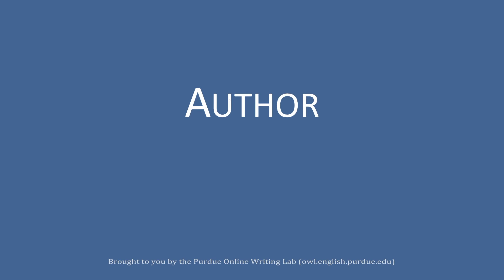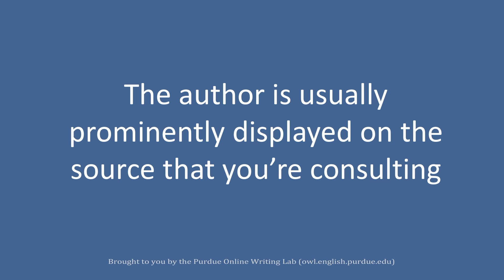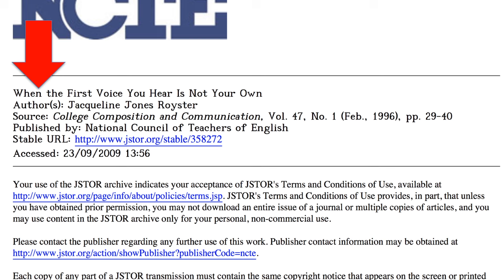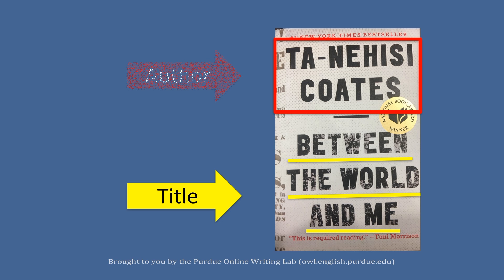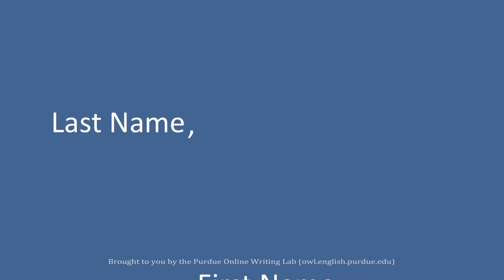Author. The author is usually prominently displayed on the source that you are consulting. For example, on a database article, the author will usually appear on the first information page or directly on the first page of the source, and will often be near the title of the work. Once you have found the author, begin citing the author's name by starting your Works Cited entry with the author's last name, followed by a comma, and then the author's first name, followed by a period.